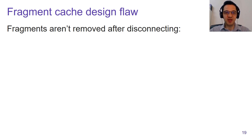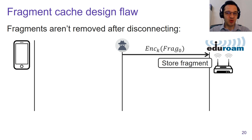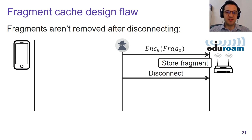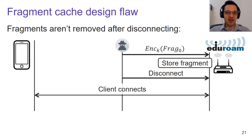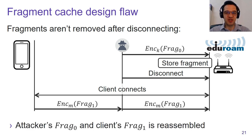The design flaw here is that fragments are not removed from memory after disconnecting from a network. Imagine targeting an enterprise network. An attacker can spoof the MAC address of the victim but use their own credentials to connect to the access point. Once connected, we can store a malicious fragment into the access point's memory. The access point stores this fragment in plain text under the victim's MAC address. When the adversary disconnects, this malicious fragment remains in the fragment cache, and if the client connects and sends a fragmented frame, we can force the victim's fragment to be combined with our injected malicious fragment.